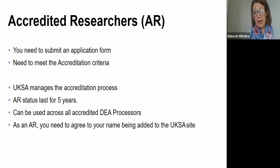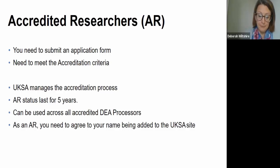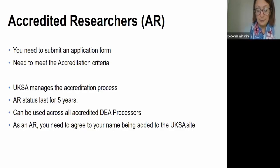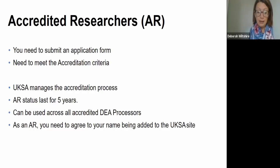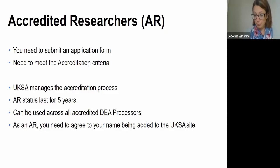To become an accredited researcher, or AR, you submit an application form and must meet accreditation criteria. The UK Stats Authority manages the accreditation process. AR status, once granted, lasts for five years — you don't need to repeat this for every project. That status also covers you across all accredited DEA processors. So if you go through the process with the UKDS and later want to apply for data at HMRC, you take that AR status with you and don't need to go through the process again.